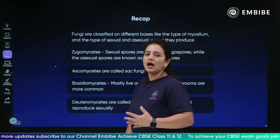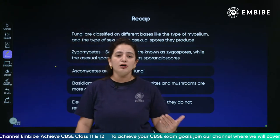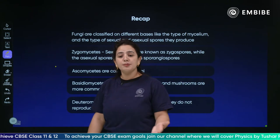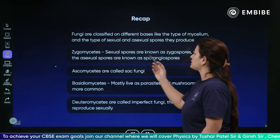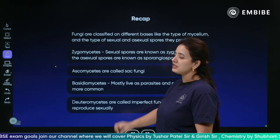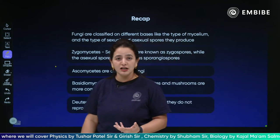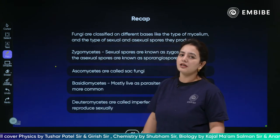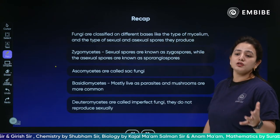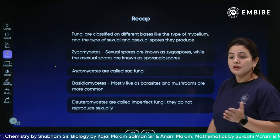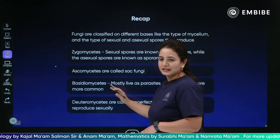The Deuteromycetes are called fungi imperfectae because they do not have sex organs and do not show sexual reproduction. Talking about Zygomycetes, the sexual spores are known as zygospores while the asexual spores are known as sporangiospores. We discussed about Ascomycetes, also known as Sac Fungi, and Basidiomycetes - the fungi that falls into the category of mushrooms. Mushrooms, whether edible or poisonous, fall into the category of Basidiomycetes.